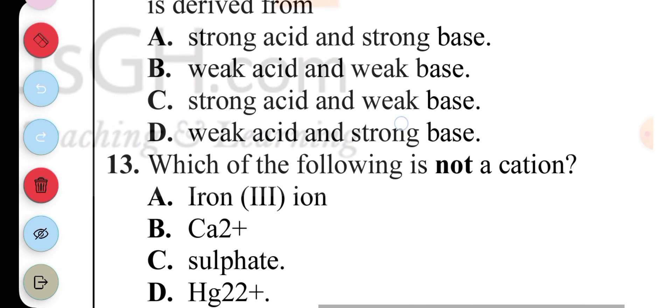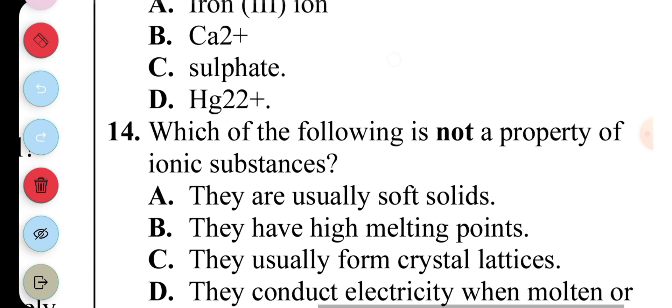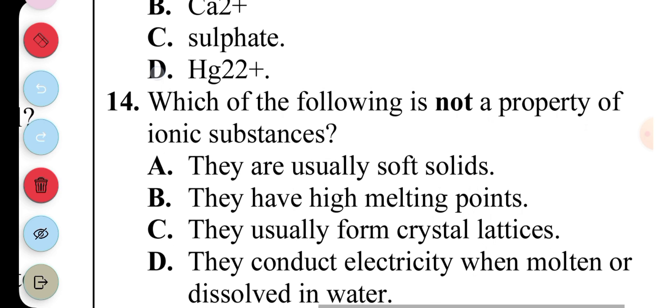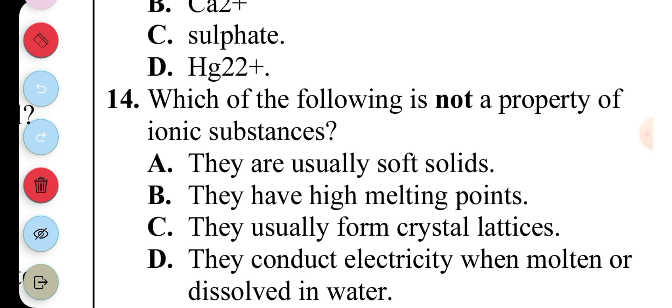Question 13: Which of the following is not a cation? The one which is not a cation is C, Sulfite. Question 14: The following is not a property of ionic substances: A. They are usually soft solids, B. They have high melting points, C. They usually form crystal lattices, D. They conduct electricity when molten or dissolving in water. So the one that is not a property of ionic substances is A, they are usually soft solids. Actually they're hard.